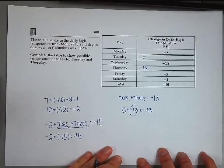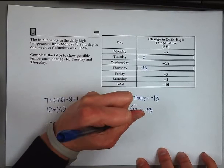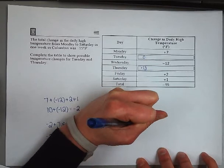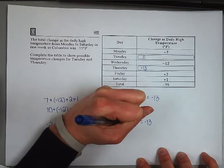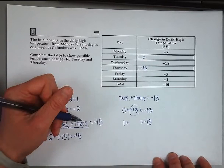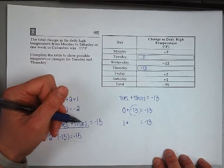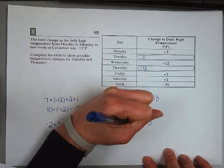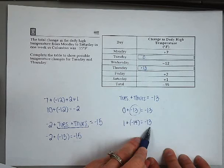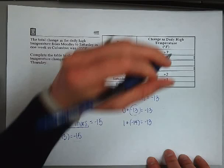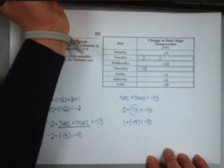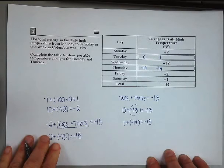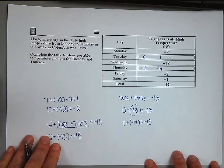We can think of other possibilities too. Maybe the change for Tuesday is positive one. On your own, try to figure out what plus positive one gives us negative thirteen. You should get that one plus negative fourteen gives us negative thirteen. So when Tuesday has a change of positive one, Thursday changes by negative fourteen.